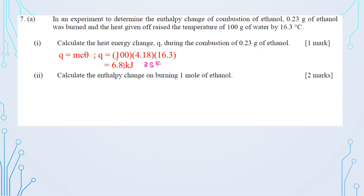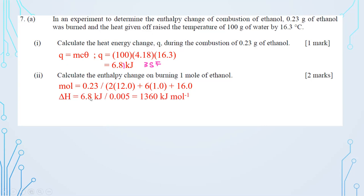Calculate the standard enthalpy change for burning one mole of ethanol. Moles of ethanol = 0.23 ÷ (2×12.0 + 6×1.0 + 16) = 0.005 mol. ΔH = −6.81 ÷ 0.005 = −1360 kJ/mol. Don't forget the negative sign; the final answer in three significant figures is −1360 kJ/mol.